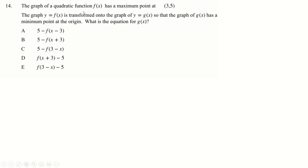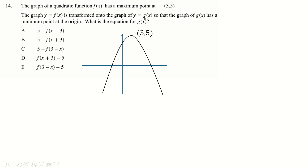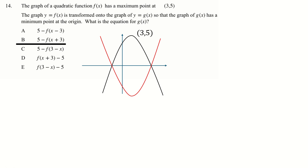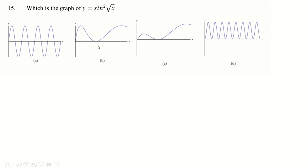This quadratic function has a maximum at (3, 5) so it's an upside-down quadratic. It's being transformed onto the graph g(x) so the minimum point is now at the origin. First we turn this graph upside down using minus f(x), which moves the maximum to a minimum at (3, -5). Then we move it up 5 places using +5, and left 3 places using x + 3. So the answer will be B.